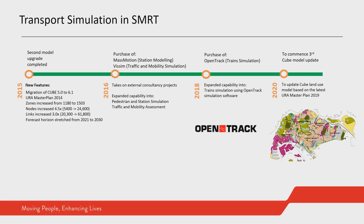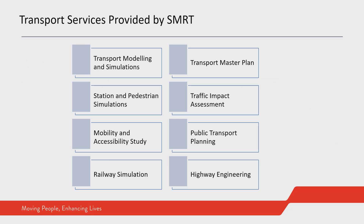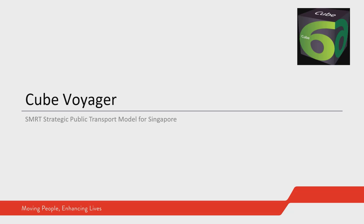In 2016, we branched out to traffic and station modeling with the purchase of VISSIM as well as Mass Motion. In 2018, we purchased OpenTrack for train simulation — this is the micro-simulation for train networks. Currently, we are in the midst of the third model update to update the land use model based on the latest Master Plan 2019. We are also offering consultancy studies, and these are the services provided by SMRT. Now let's move on to the CUBE strategic model.